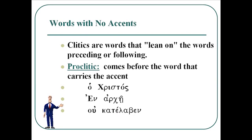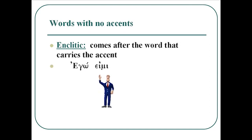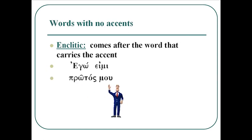Similarly, ou katelaben has no accent on the ou, but the accent is carried by the katelaben. These words are called proclitics because they have no accents and they precede the word that does carry the accent. Now the enclitics are words that have no accent that follow the word that carries the accent. So for example, ego me — the ego carries the acute accent. Protos mu has two accents, which is rare on a Greek word, but the mu carries no accent of its own, so a secondary accent is added to the protos. These words that follow the accented word are called enclitics.